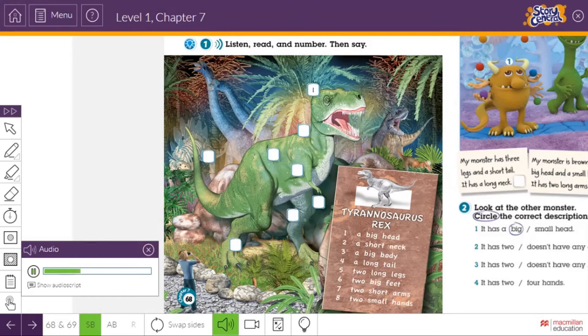Look, he has a big head. Two, a short neck. Three, a big body. Four, a long tail. Five, two long legs. Six, two big feet. Seven, two short arms. Eight, and two small hands.